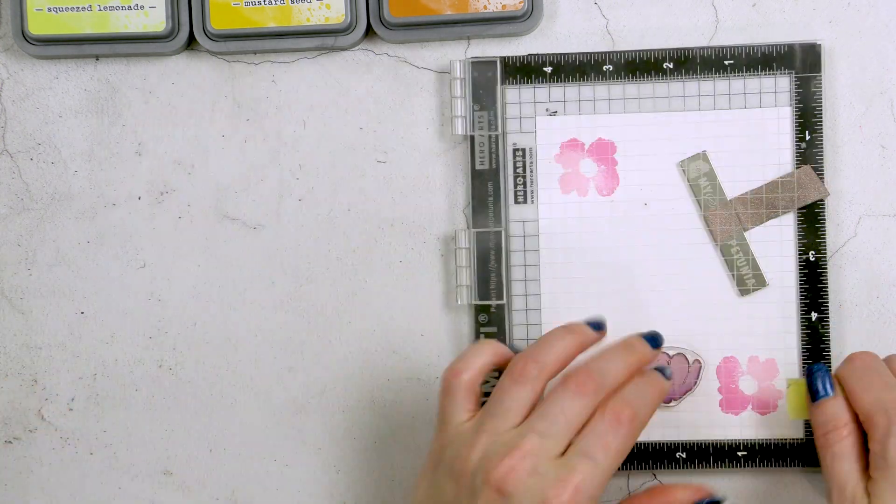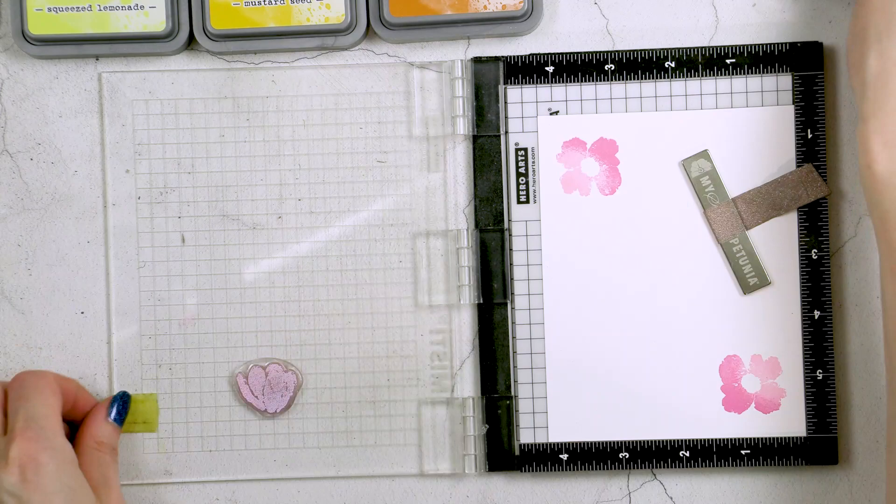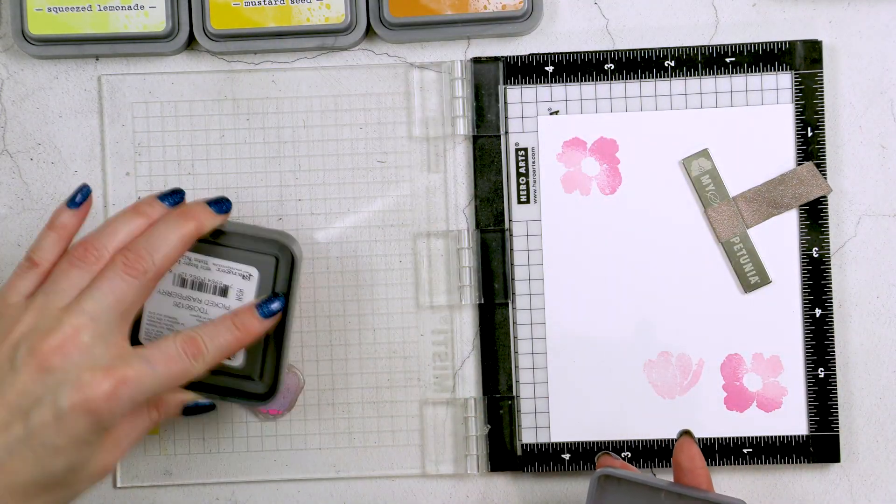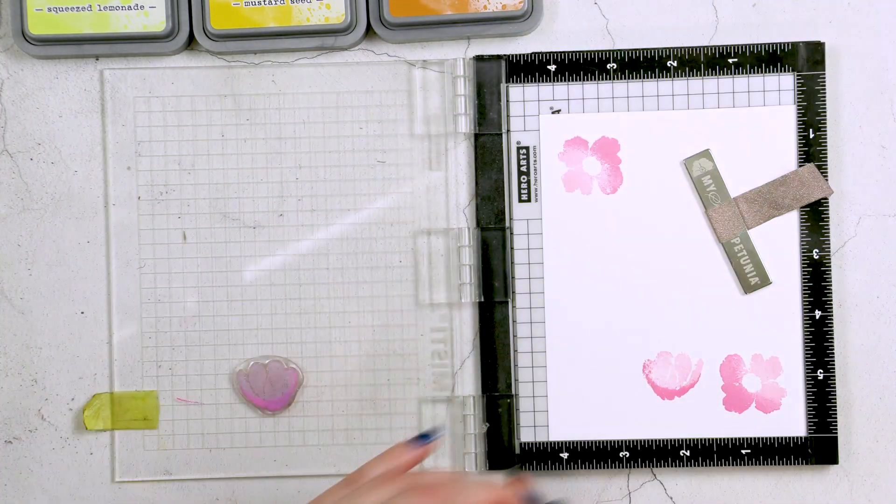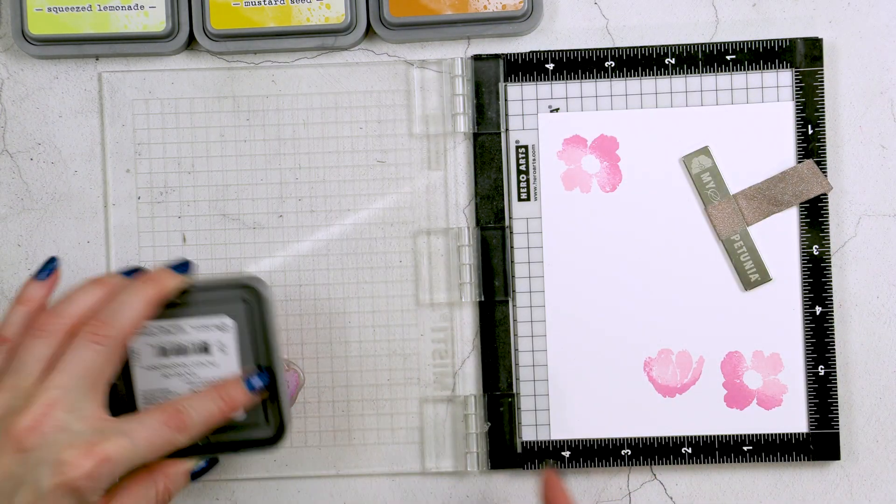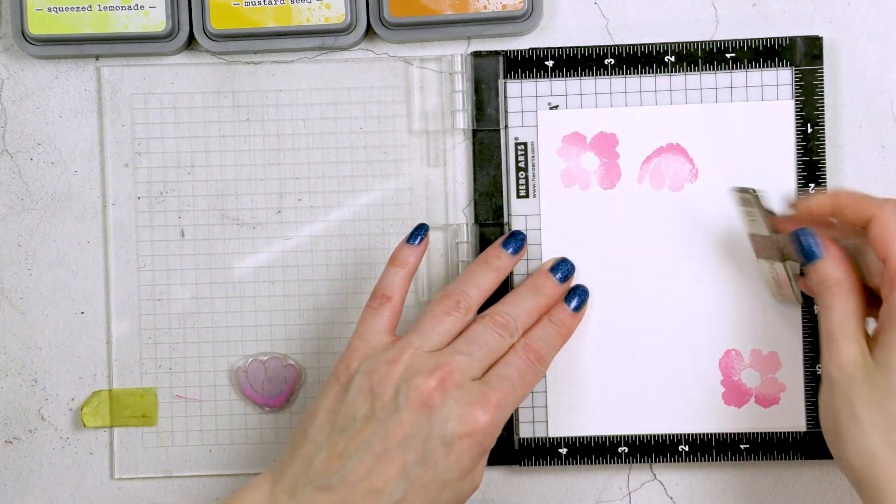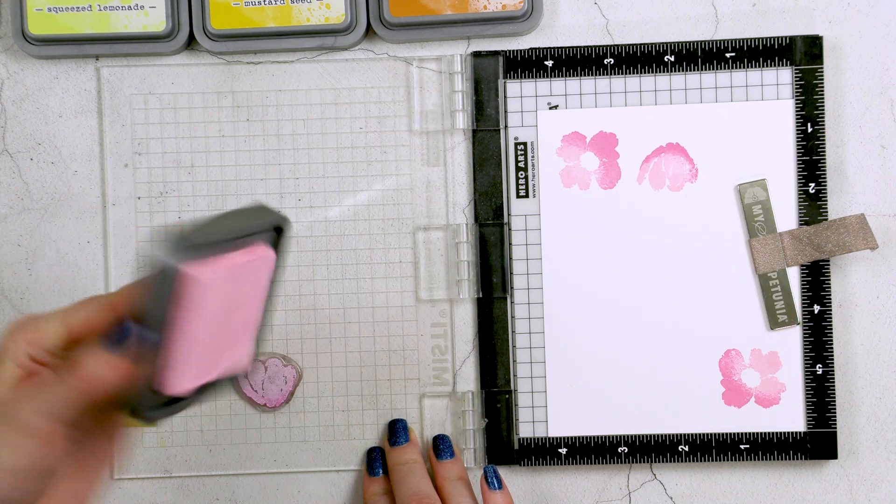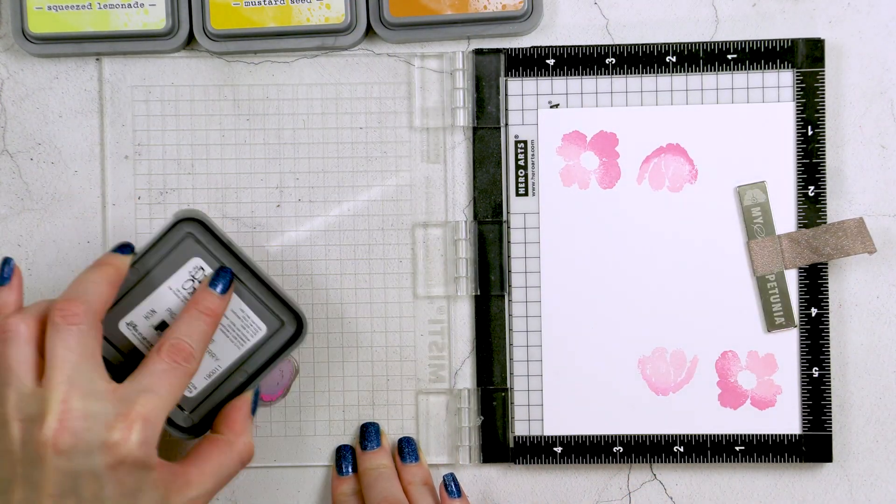So I picked a couple of colors to stamp flowers in pink and yellow and then I will also use the green ink to stamp the leaves. Now the colors I'm using are Spun Sugar and Picked Raspberry for the pink flowers, Squeezed Lemonade, Mustard Seed and Wild Honey for the yellow flowers, and then Twisted Citron Distress Oxide and Simon Says Stamp Green Leaf Dye Ink to stamp the leaves.